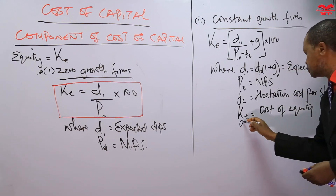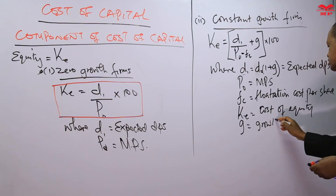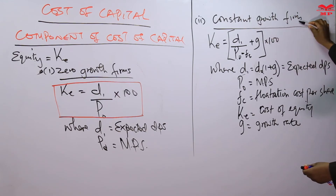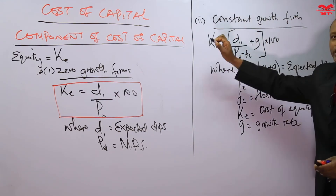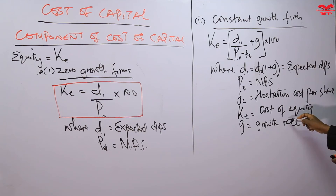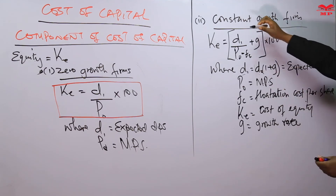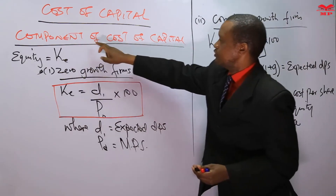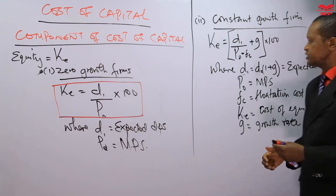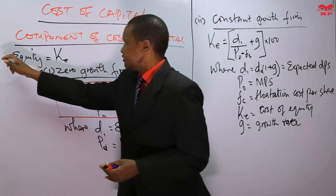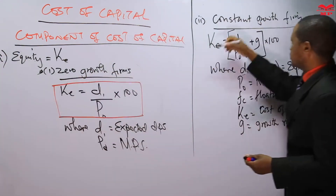G is the growth rate, because we are talking about a constant growth firm — a firm growing at a constant rate. So that is how you determine the cost of equity (KE), which is a component of cost of capital. To summarize the equity formulas: zero growth firm uses KE = D1/P0 × 100, and constant growth firm uses KE = D1/P0 + G × 100.